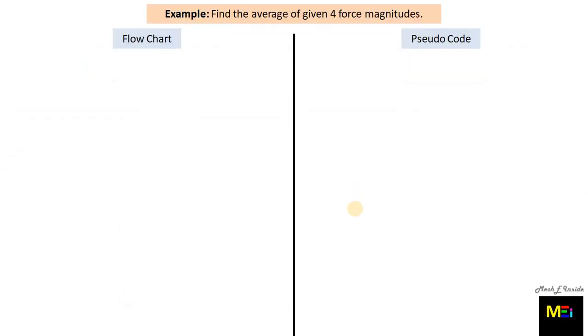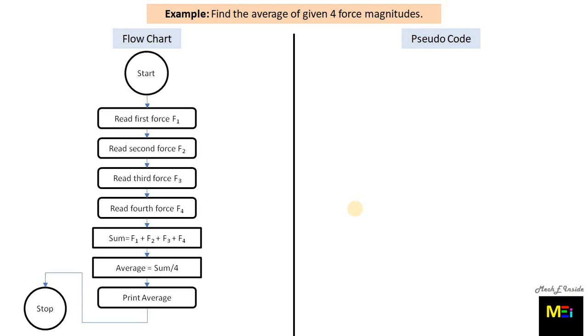Let's again have an example of finding the average of given four force magnitudes. Then, the diagrammatic representation that is a flowchart. The steps are shown like this. As we have shown the fundamental elements of flowchart, you can start within the circle and then there are oblongs where we are getting the input of the force magnitudes.